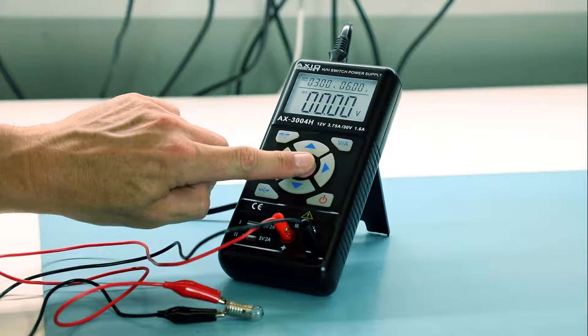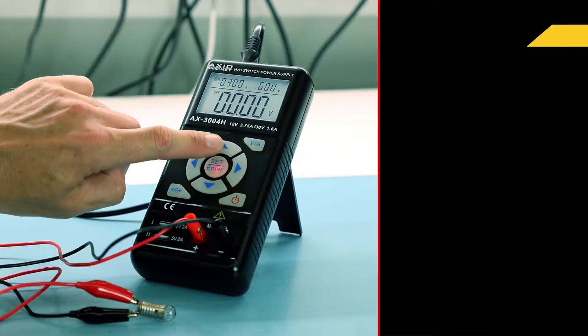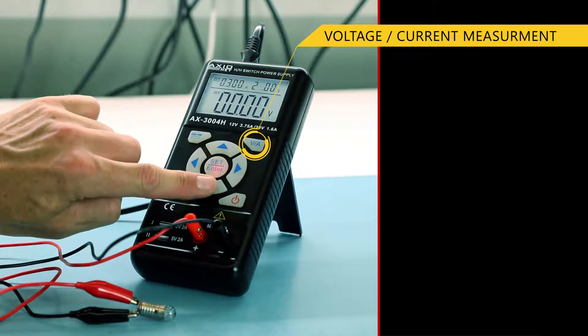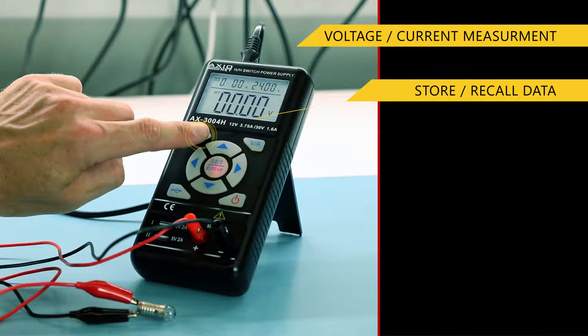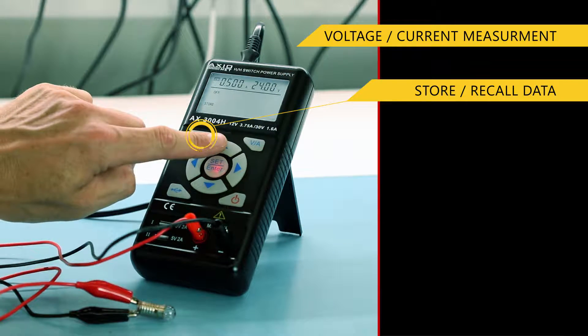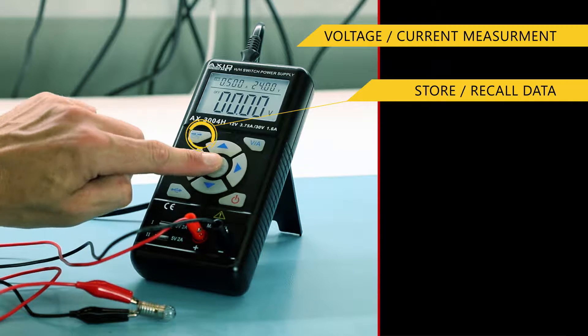The AX3004H allows you to set voltage and current values using buttons on the front panel, as well as save sets of settings to ensure efficient and convenient operation.